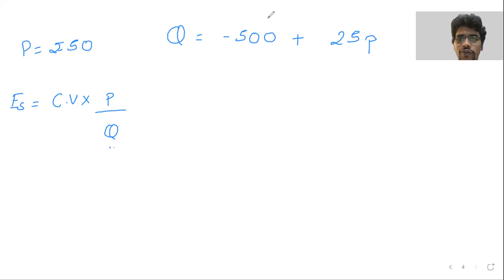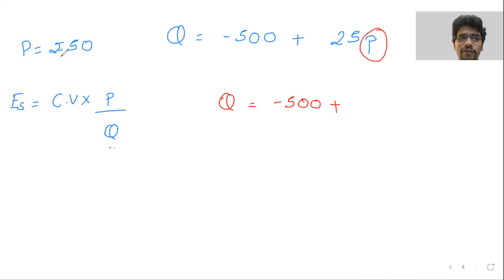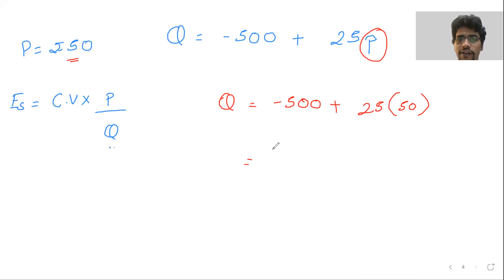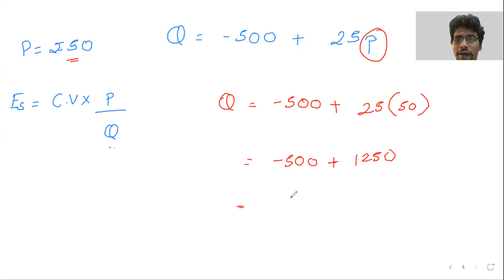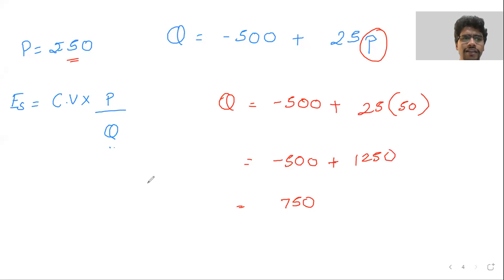First solve the quantity equation. Q = -500 + 25 × 50. That gives minus 500 plus 1250. So Q equals 750. Quantity is found. Done.